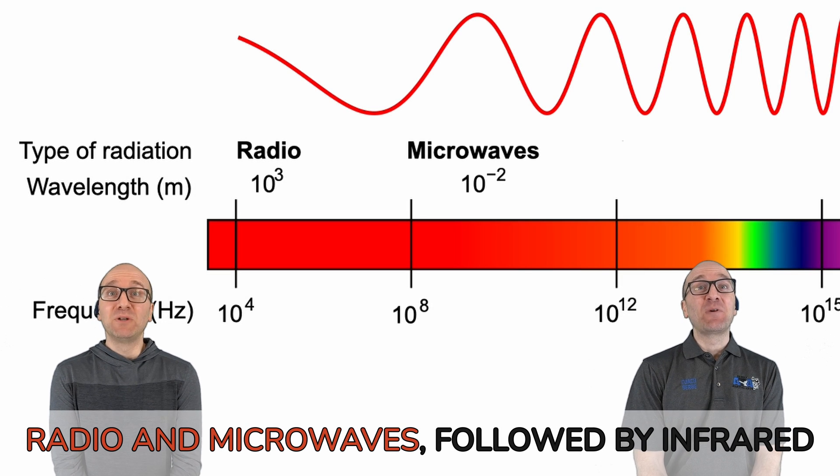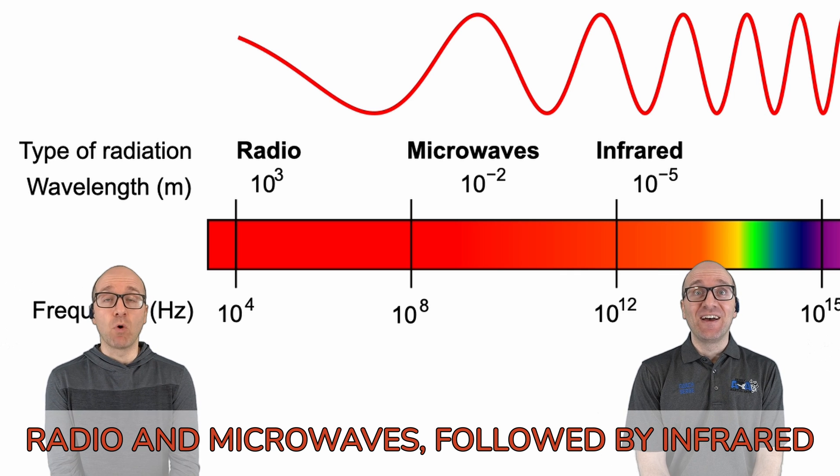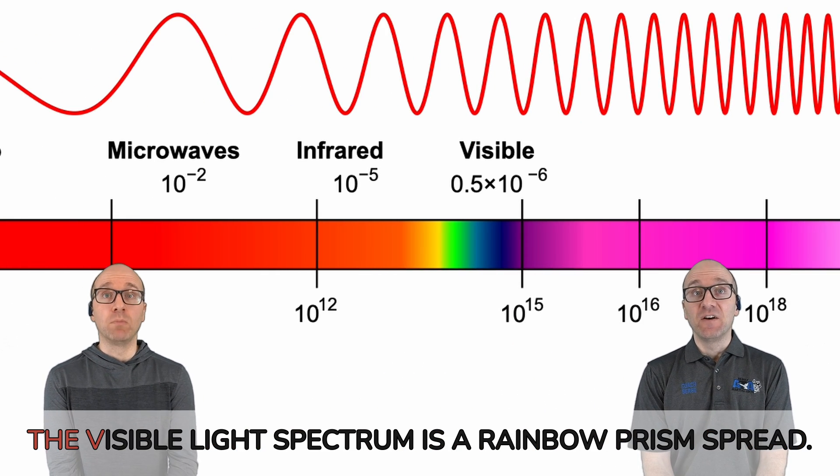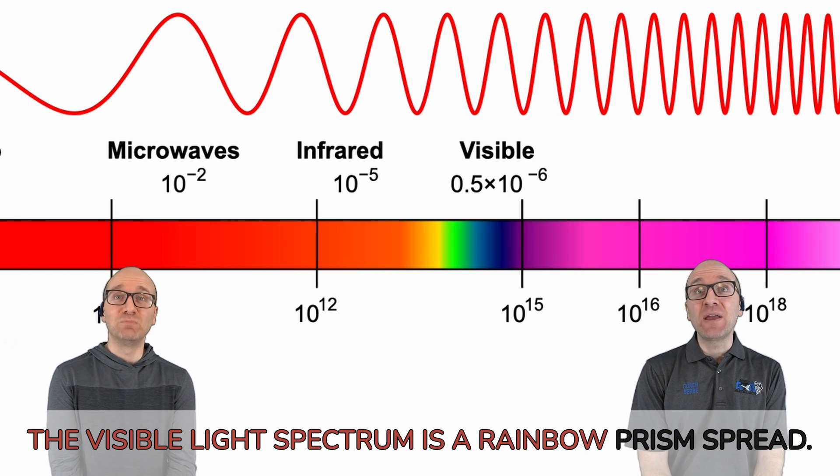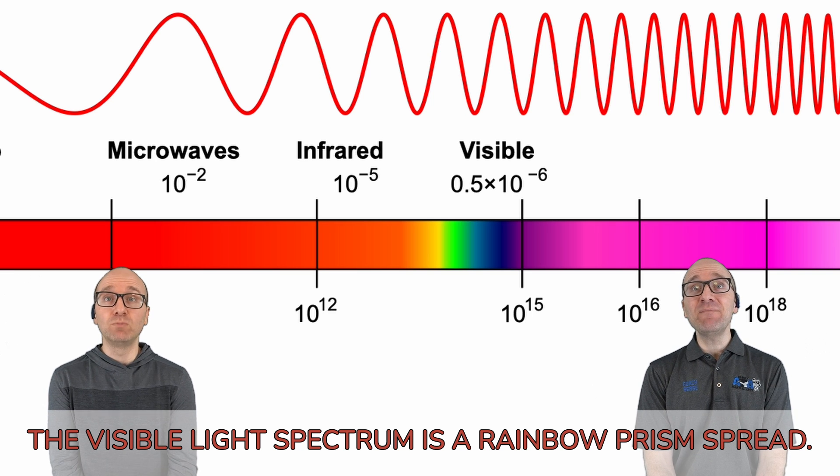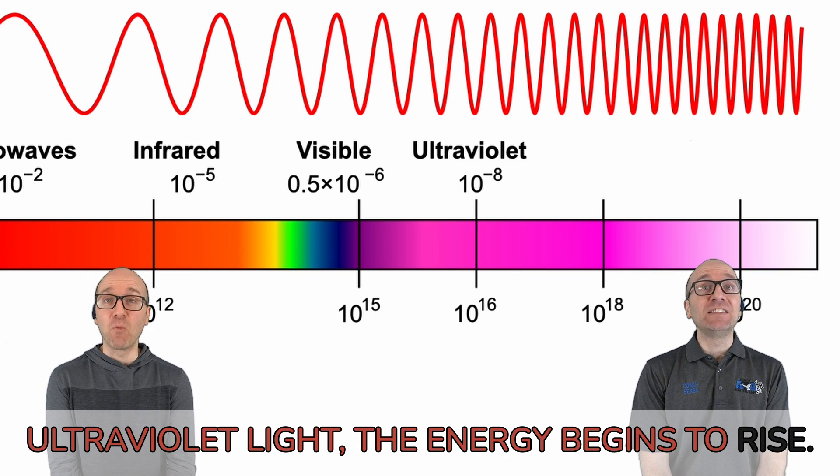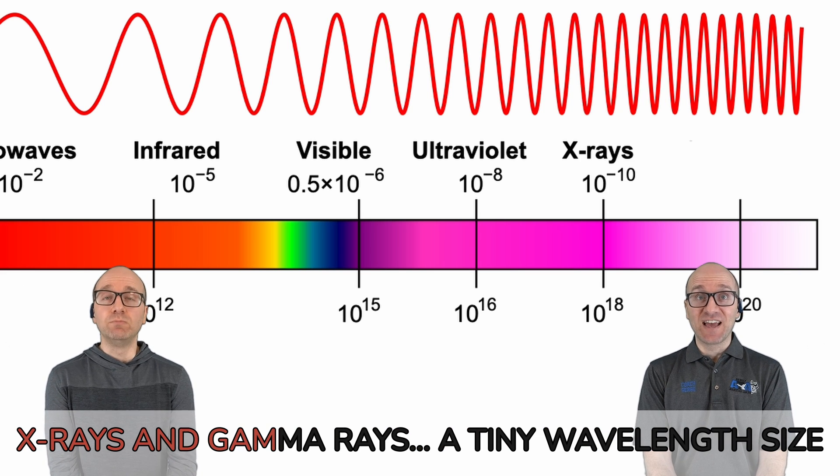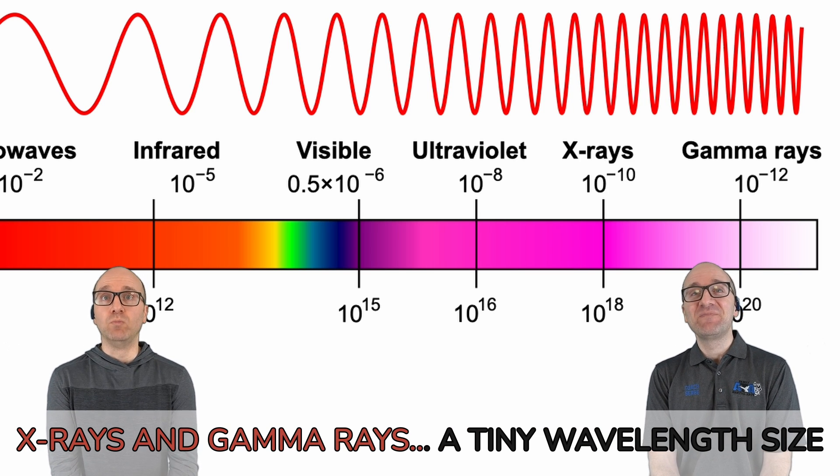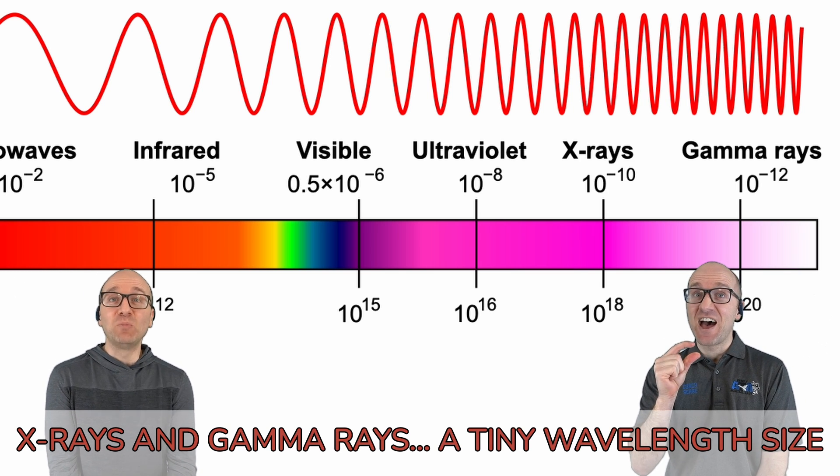Radio band, microwaves, followed by infrared. The visible light spectrum is a rainbow prism spread. Ultraviolet light, the energy begins to rise. X-rays and gamma rays, a tiny wavelength size.